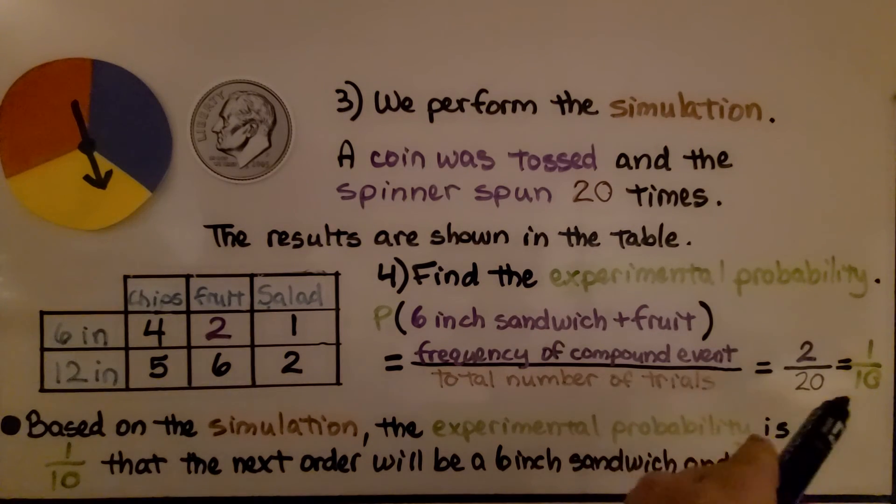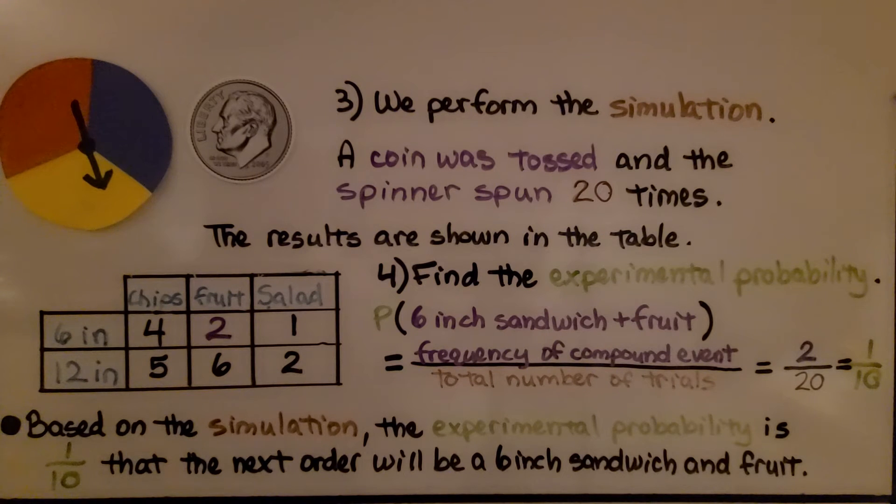We have 2/20, which simplifies to 1/10. So based on the simulation, the experimental probability is 1/10 that the next order will be a 6-inch sandwich and fruit.